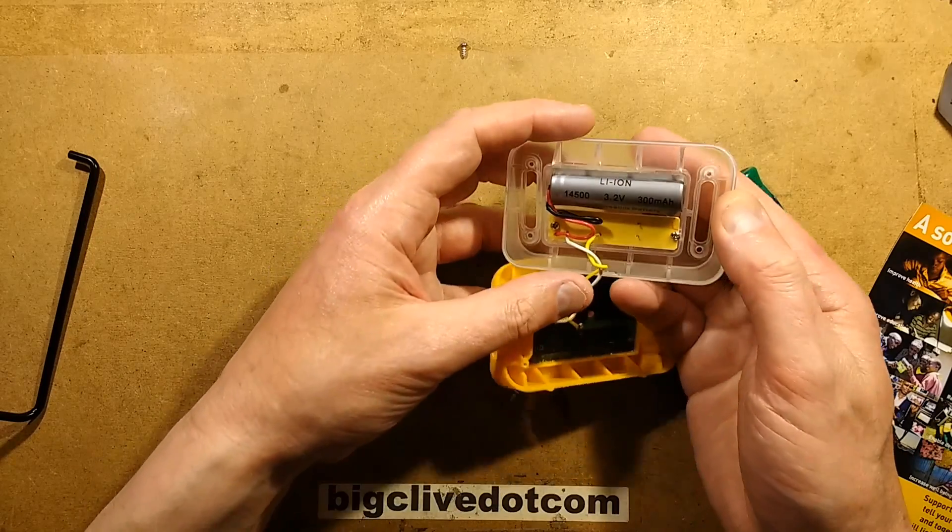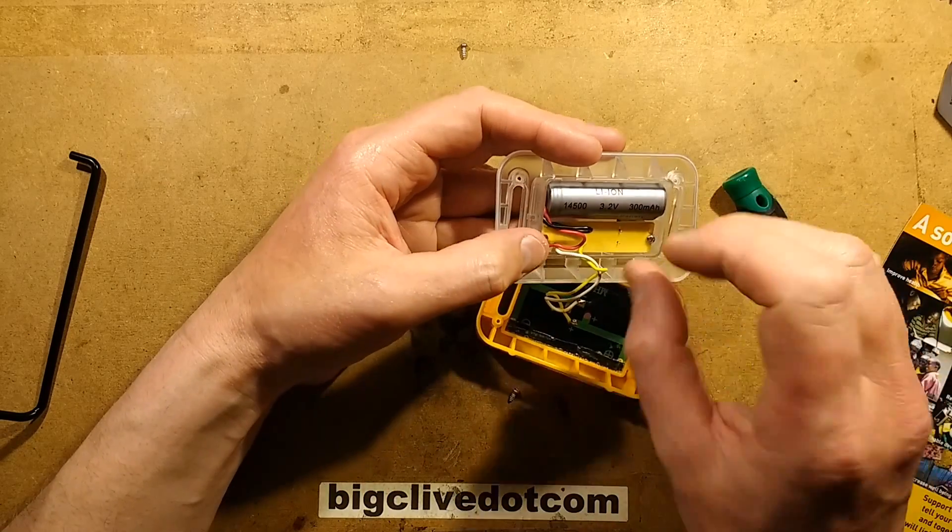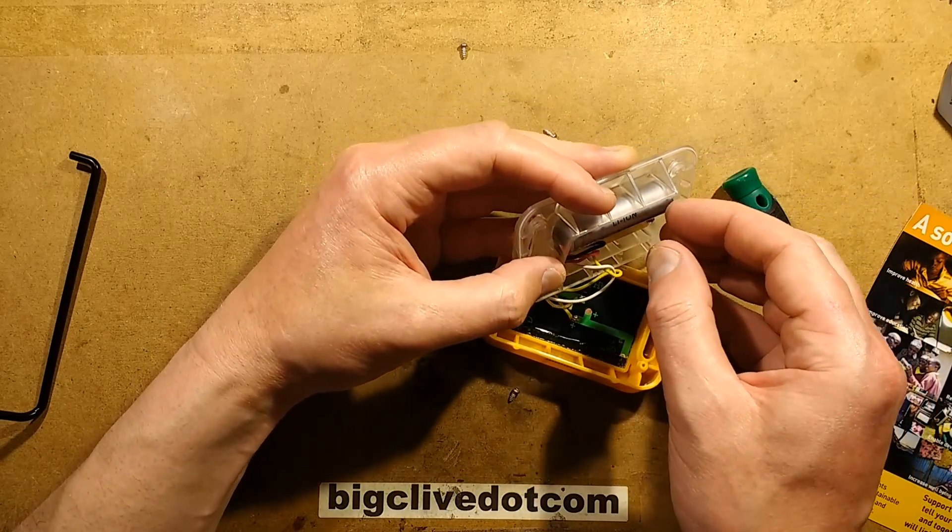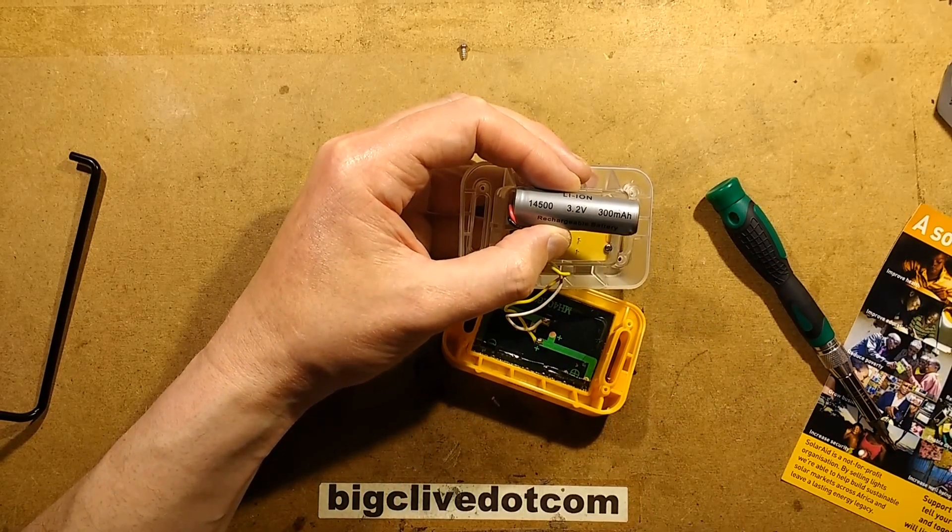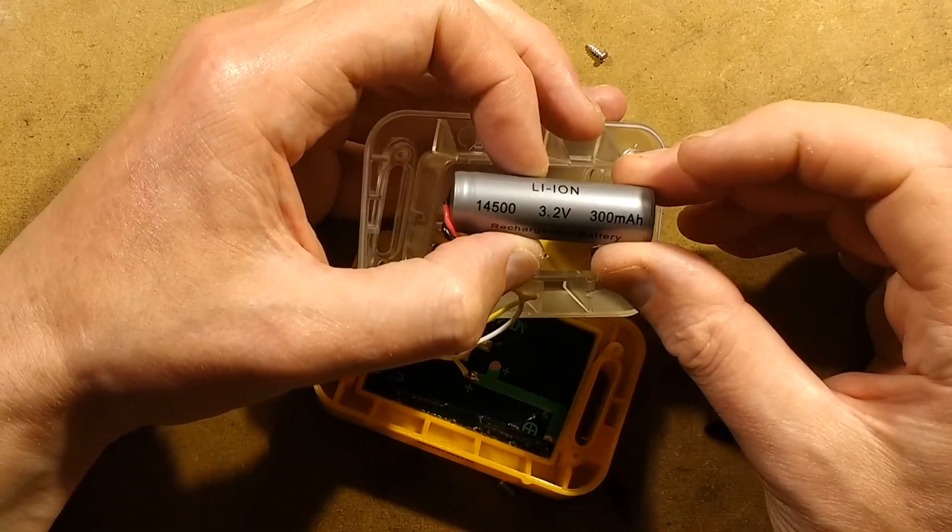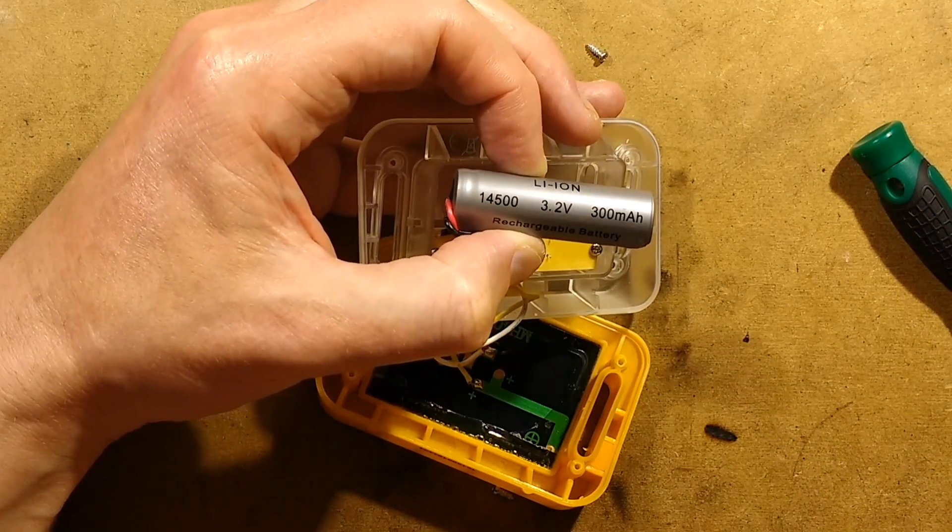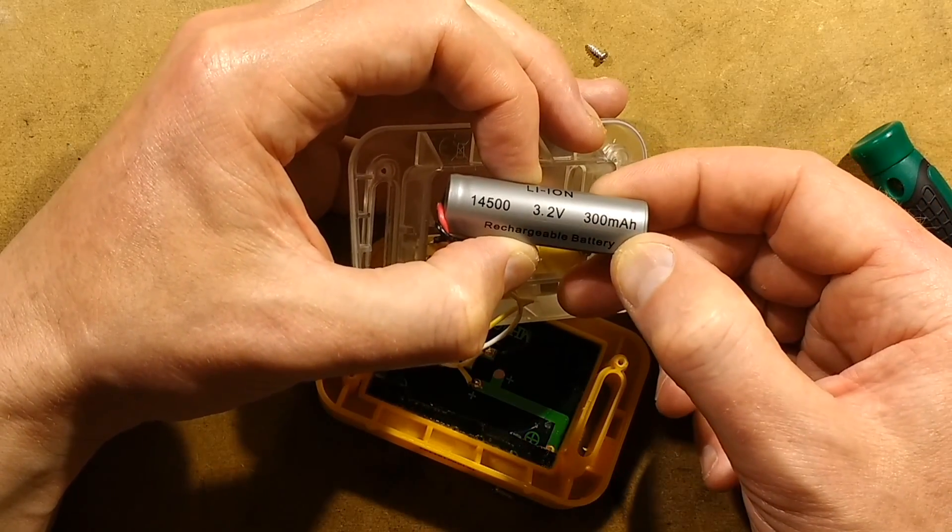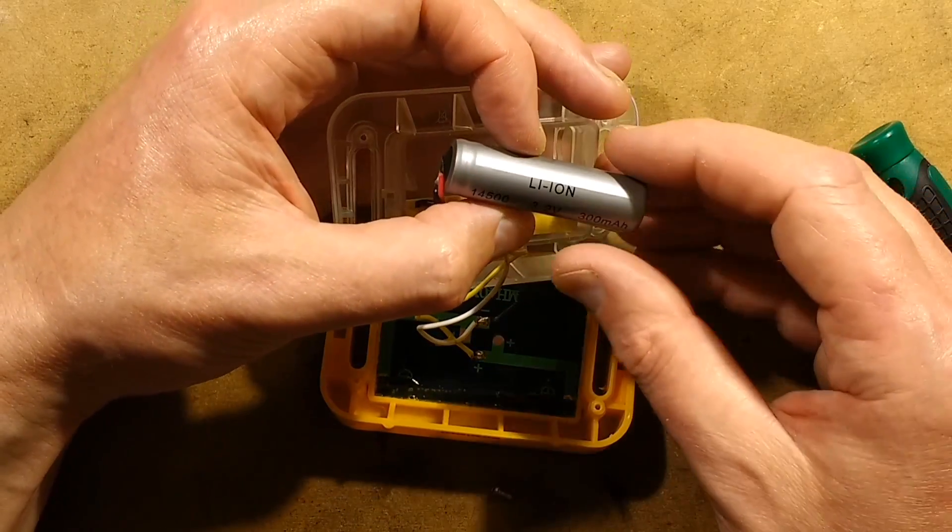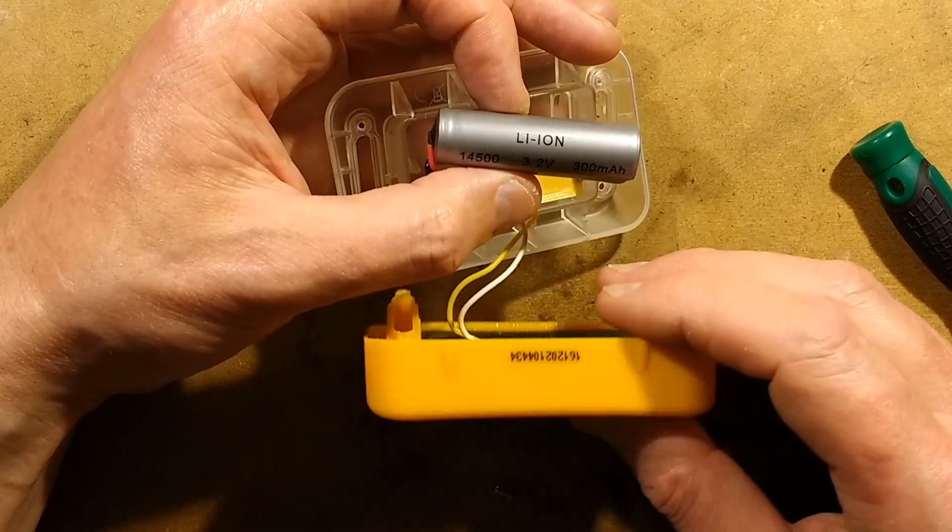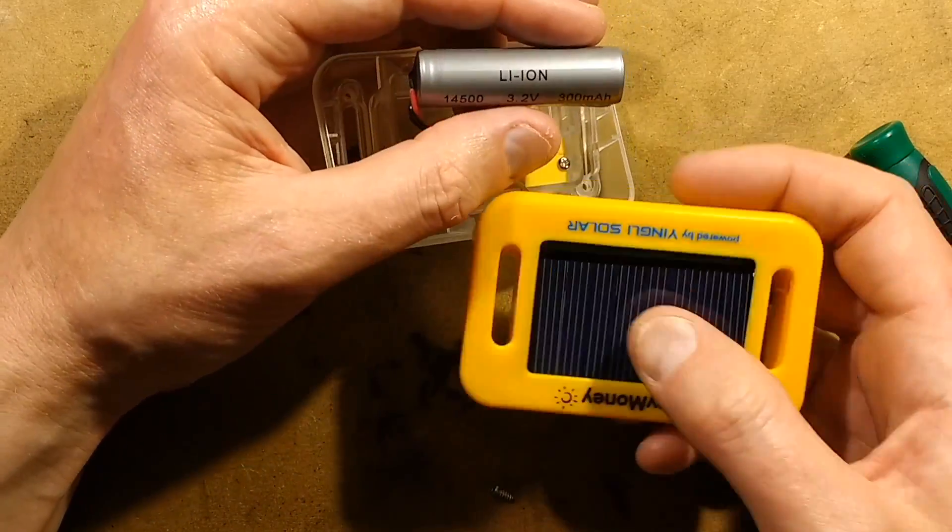It's got a lithium cell, 14500. That means 14 millimeters diameter by 50 millimeters long. As opposed to the normal cells which are about 3.6 volts, this says 3.2 volts. That suggests it's a lithium iron phosphate cell. The capacity is 300 milliamp hour, which might not sound that much, but for a small solar light like this, that's going to give plenty of time, illumination time. And it stands a good chance the battery is going to be fully charged.